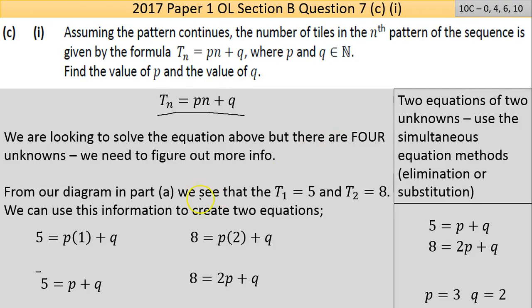I'm taking T_1 equals 5 and T_2 equals 8 to generate two equations. For the first one, total number of tiles 5 equals P times the first pattern plus Q. I'm taking the second one because the numbers are smaller - it doesn't matter which one I take. The number of tiles in the second pattern is 8, and that's the second pattern. When you simplify, you end up with a second equation of the same two unknowns, so I can use the simultaneous equation method.